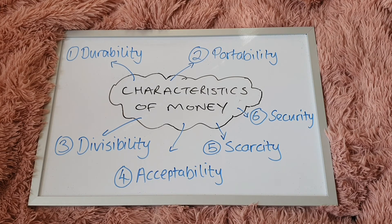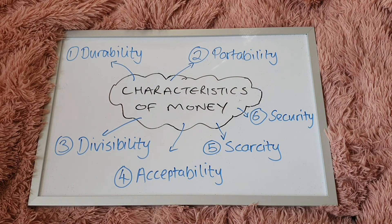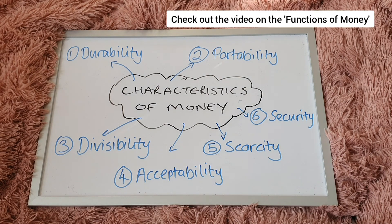So being durable, portable, divisible, acceptable, scarce, and also secure — as a consumer, you will be able to make that transaction without any hesitation or problem. Those are the six characteristics of money.